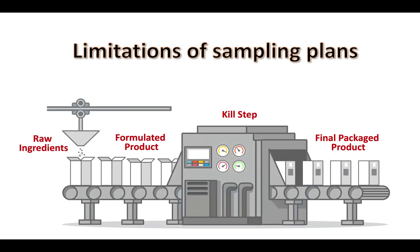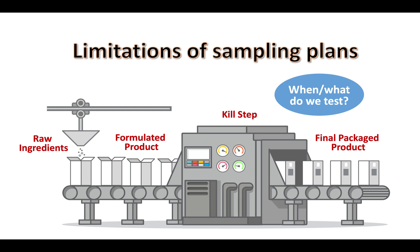Another complication and limitation to sampling plans is determining when and what to test. In this example, we have a product that is formulated from raw ingredients, sealed in a package, and then sent through a kill step, similar to what you may have with a canned product. Here, it would make sense that we do a microbial test after the kill step, but a better method to ensure that our product is pathogen-free is making sure that our kill step is validated to control those pathogens and verifying that the scheduled process is followed for each lot of product. However, if you had a very high microbial load coming in on your raw ingredients, that validated kill step may not be effective. So perhaps some raw ingredient testing would be warranted.